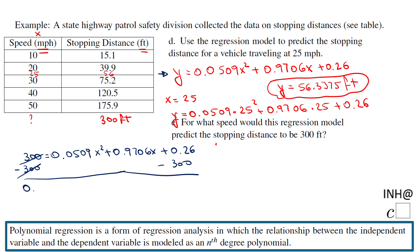And we end up with this quadratic equation. As you know, we can switch the sides. If a equals b, b equals a. This equality is symmetrical. So we have 0.0509 x square plus 0.9706 x, and now we have here minus 299.74 equals zero.